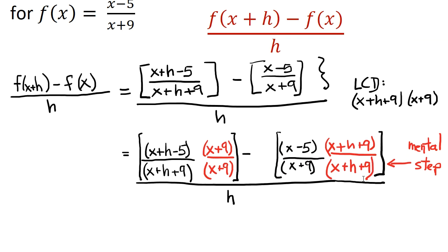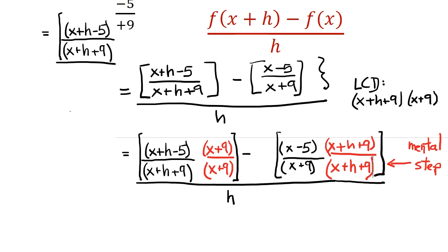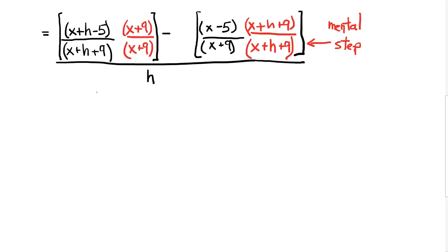I'm going to multiply x plus h minus 5 times the quantity x plus 9, and put everything over the common denominator. My next step is to multiply the top. So what I have here is x plus h minus 5 multiplied by the quantity x plus 9. So that's going to give me x squared plus xh minus 5x plus 9x, plus 9h minus 45.